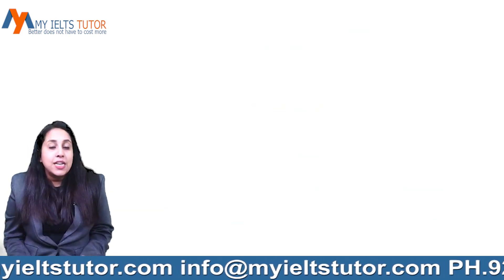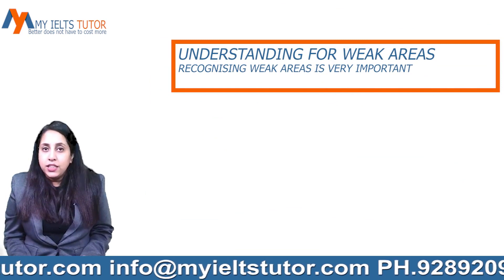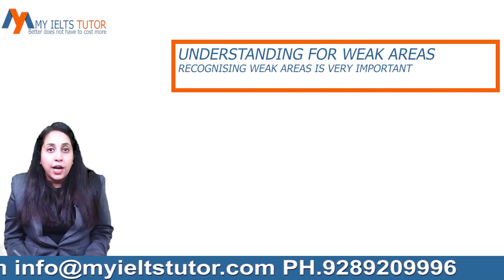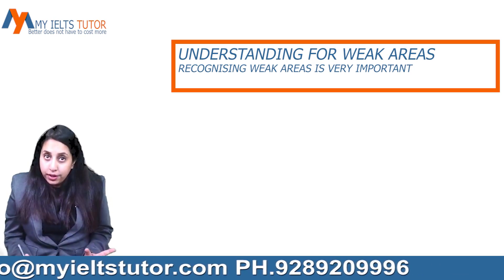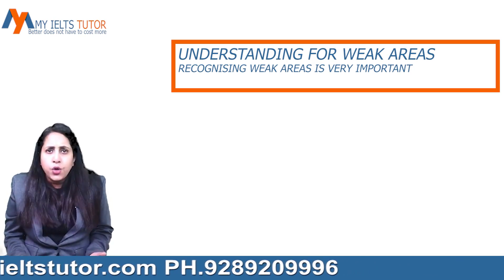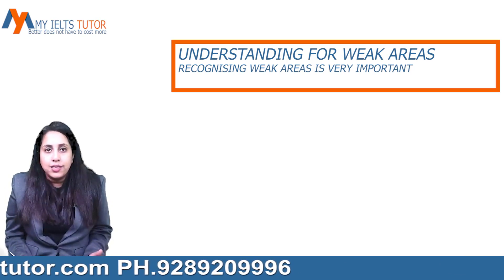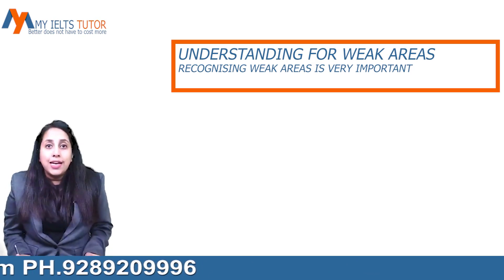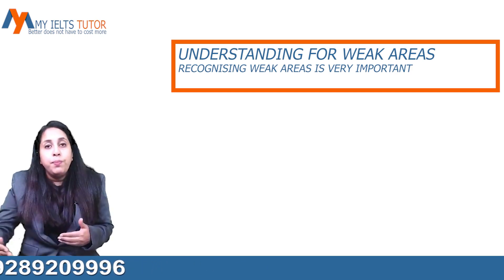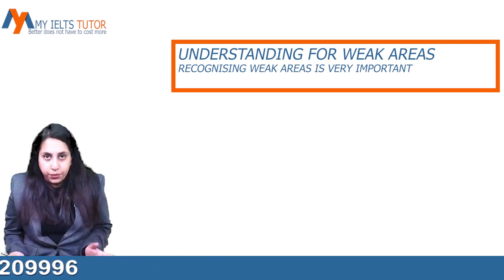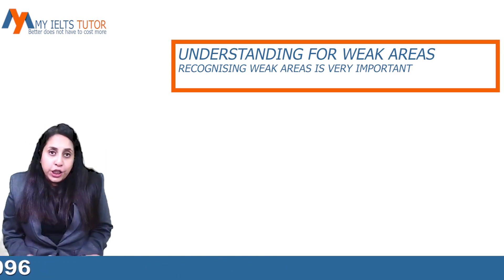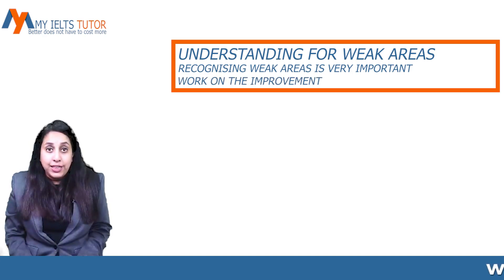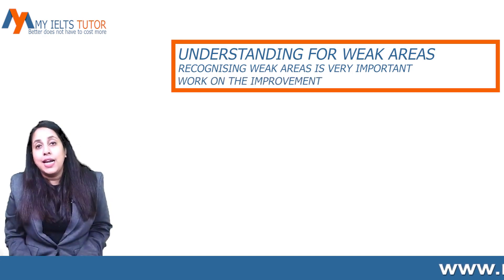Tip number six is understanding your weak areas. When you practice writing task 2, you will understand that some areas in your writing are weak areas. You have to recognize them — recognizing them is very important. You yourself cannot always recognize them; you need proper guidance and instruction. On recognizing them, you also need someone to guide you on how to improve. You need to recognize your weak areas and work on improvement as per the marking criteria.